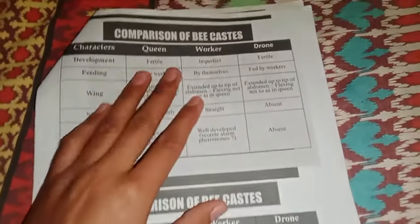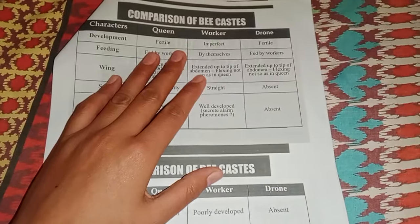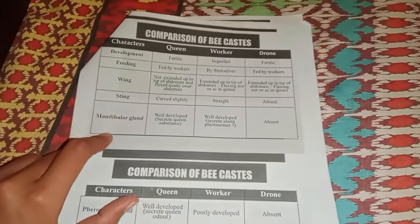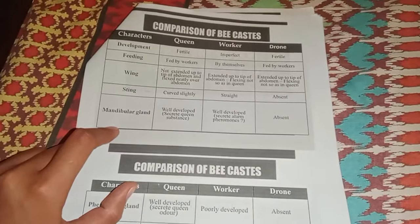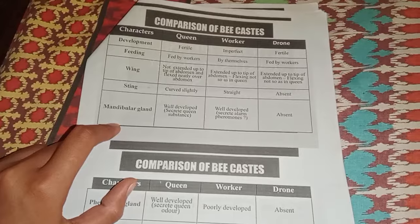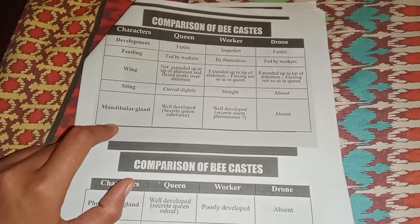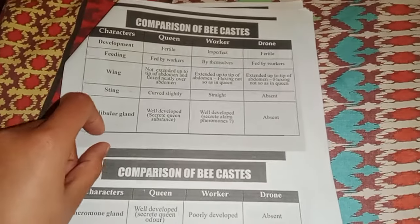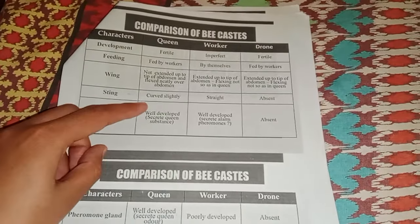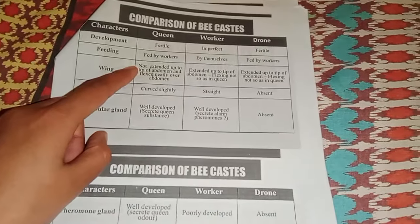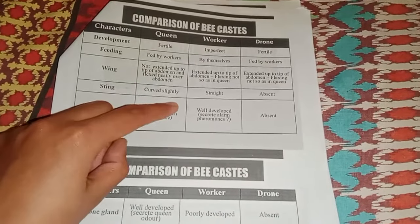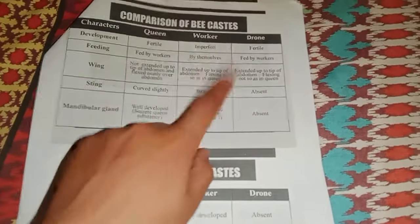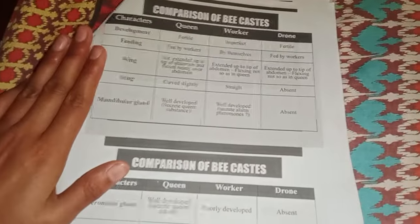The sting of the worker is straight, and in the drone the sting is absent. Regarding the mandibular gland, it is well developed in the queen, well developed in the worker, and absent in the drone. This was the total comparison between these three castes.